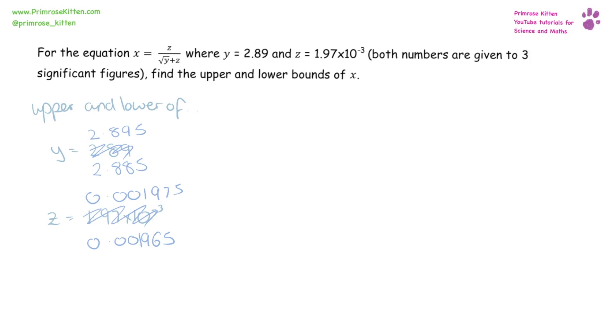Now if we want to find the upper and lower bounds of x, for x for the upper bounds, we are going to need to do big numbers divided by small numbers, and x lower bounds, we are going to need to do small numbers divided by big numbers.